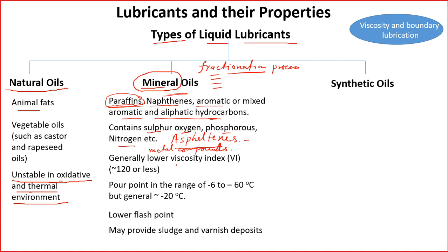Mineral oils generally have a low viscosity index. Viscosity index is a property that indicates the dependence of oil viscosity on temperature — how much the viscosity changes with a change in temperature. A high viscosity index is preferred, meaning the oil viscosity will not change much with temperature. Mineral oils generally have a viscosity index of 120 or less, meaning they are more prone to viscosity change with temperature.